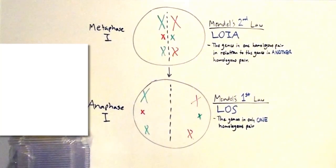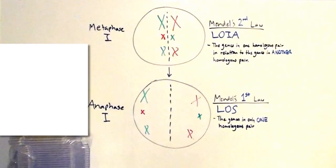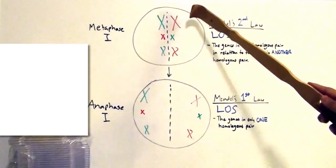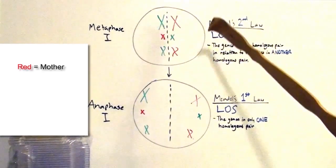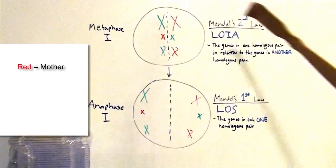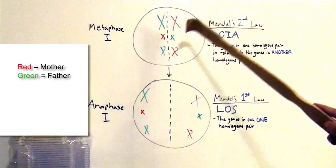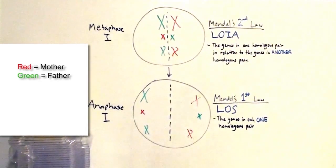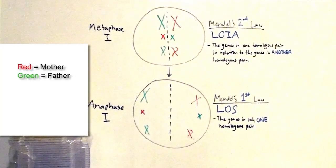We are not going to talk about Mendel's peas. To be honest, the only time I ever think about peas is when I'm eating Top Ramen or something. Let's say that red represents the chromosomes that came from the mother and green represents the chromosomes that came from the father. Now, are you ready for the law of independent assortment and the law of segregation?